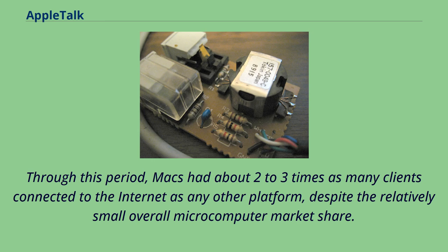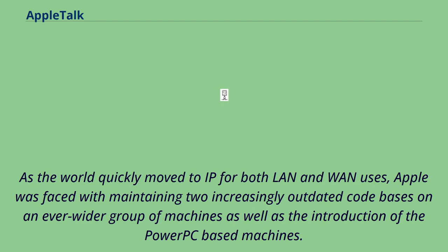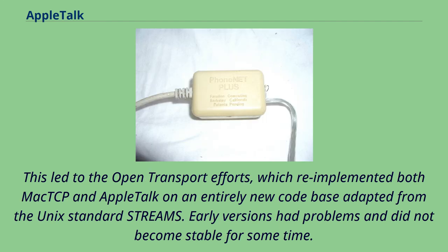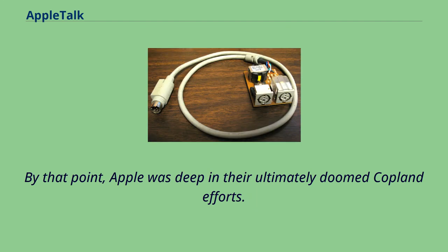As the world quickly moved to IP for both LAN and WAN uses, Apple was faced with maintaining two increasingly outdated code bases across an ever-wider group of machines, including the new PowerPC-based machines. This led to the Open Transport efforts, which re-implemented both MacTCP and AppleTalk on an entirely new code base adapted from the Unix standard streams. Early versions had problems and did not become stable for some time. By that point, Apple was deep in their ultimately doomed Copeland efforts. With the purchase of NeXT and subsequent development of Mac OS X, AppleTalk was strictly a legacy system.